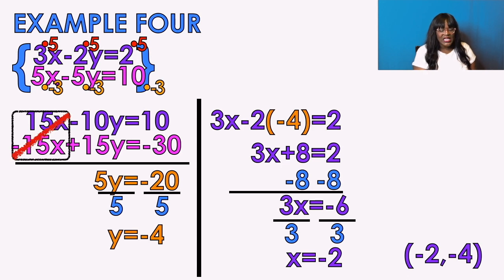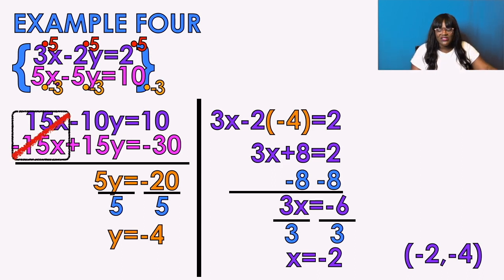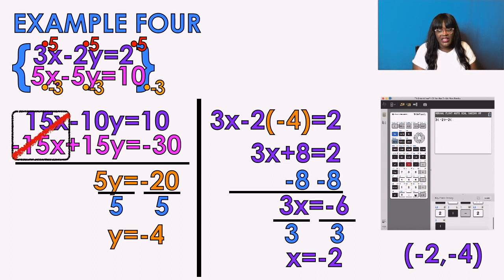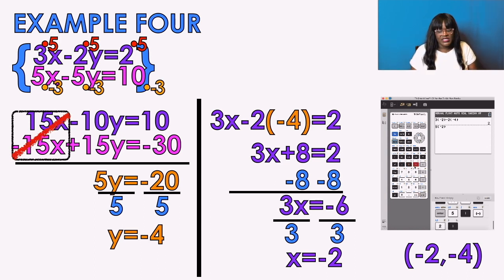Remember: just because you found y first doesn't mean y goes first in the answer — ordered pairs are x comma y. To check: plug x = −2 and y = −4 into the first equation in your calculator using order of operations; press equal and you should get the value on the other side. Then check the second equation: 5(−2) − 5(−4) equals 10. Both check out.